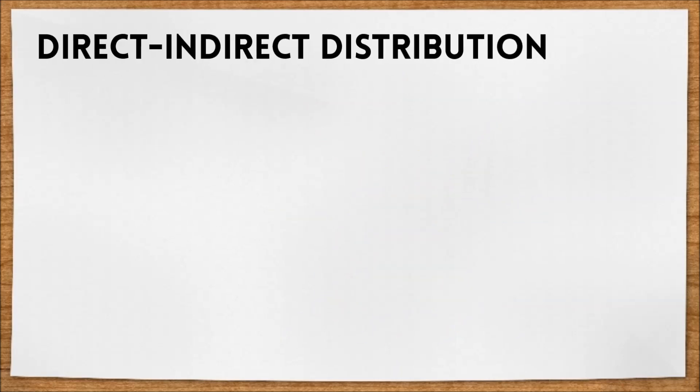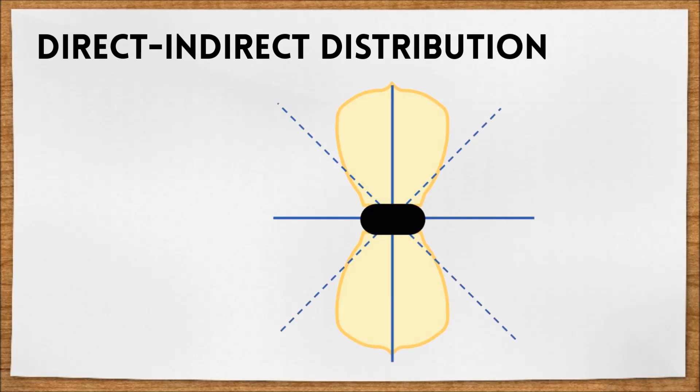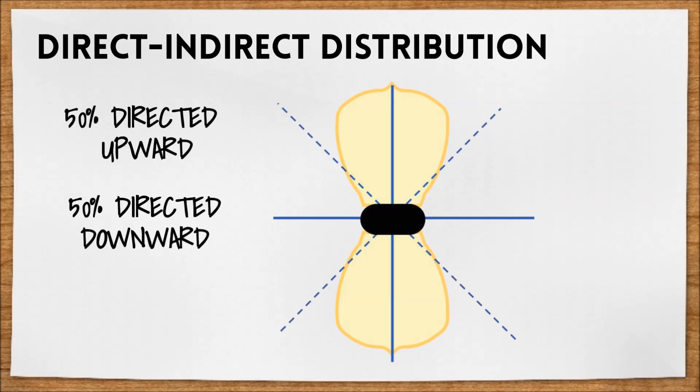Direct-indirect distribution is shown like this. In this case, half of the light is directed up and the other half is directed down.